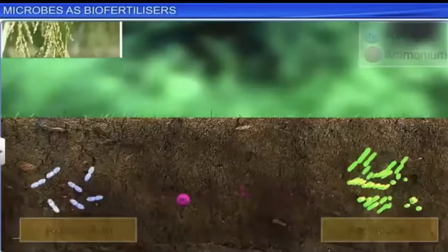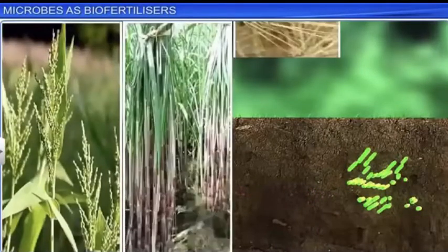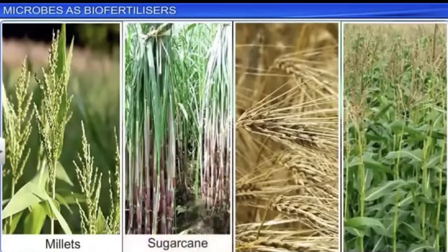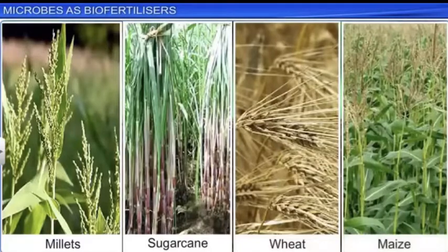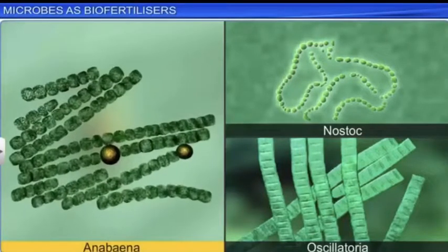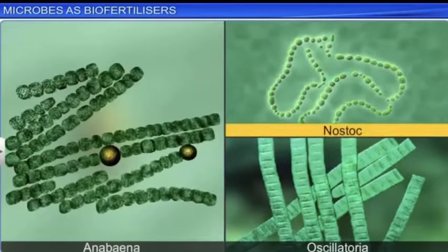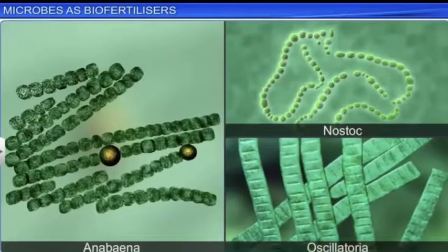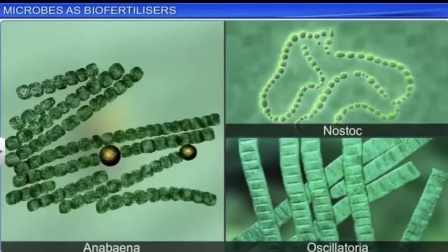Cyanobacteria are usually used for crops such as millets, sugarcane, wheat, and maize. Cyanobacteria such as Anabaena, Nostoc, and Oscillatoria are also used as biofertilizers, since they are capable of fixing atmospheric nitrogen in special cells called heterocysts.